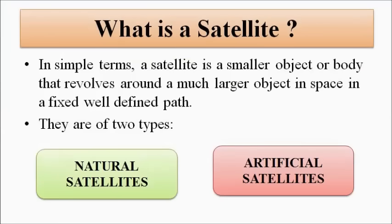The first thing we have to understand is: what is a satellite? A satellite is a smaller object or body that revolves around a much larger object in space, following a certain fixed and well-defined path. It is much smaller in size compared to the object around which it revolves. This is the simple definition of a satellite.